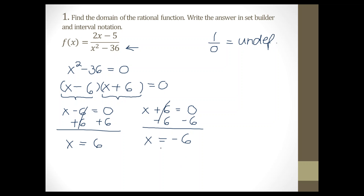Solving for x on the first part, we add 6 to both sides — that cancels out the 6 on the left — we get x equals 6. On the right side, we subtract 6 from both sides, and x equals negative 6. So we found those two values that will make our denominator equal to zero and give our fraction an undefined value.